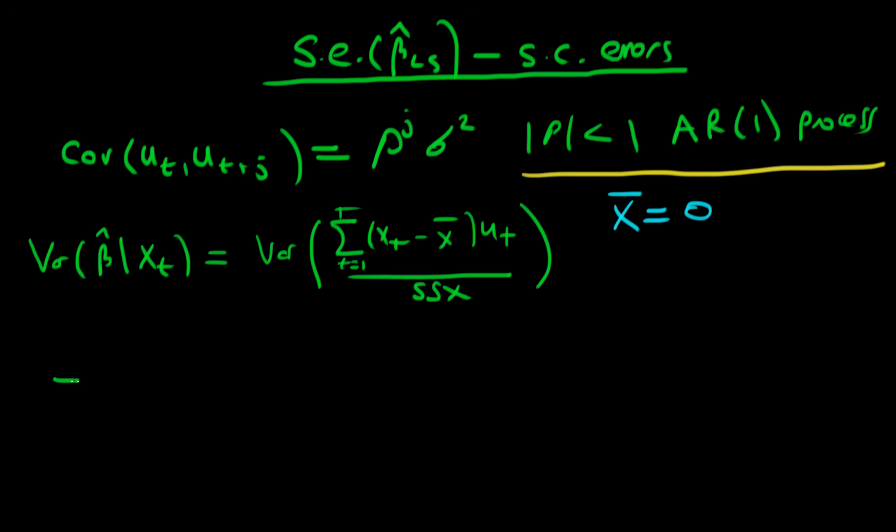Okay so in the presence of serially correlated errors we can think about expanding this term out. So we had sigma squared over SSx, but then we're also going to get a term here which contains our covariance structure, and it's going to be a double sum over xt with xt plus j where the outer sum is going from t equals 1 to t minus 1.